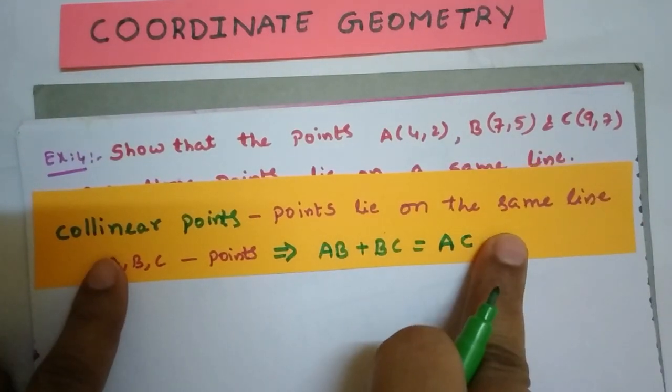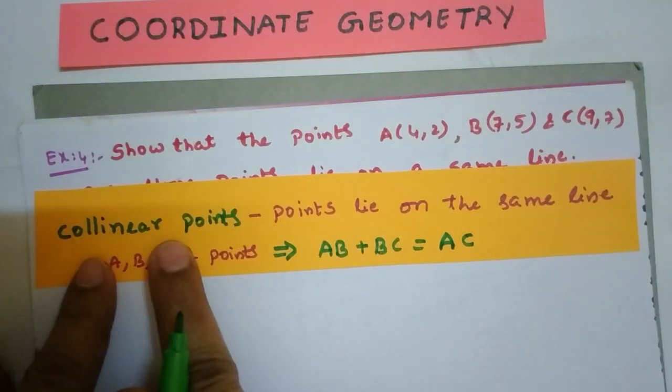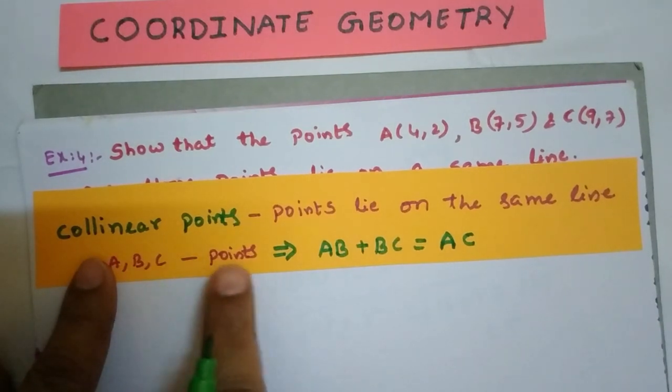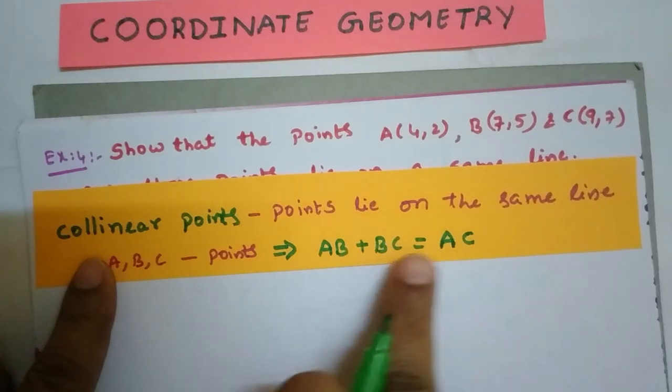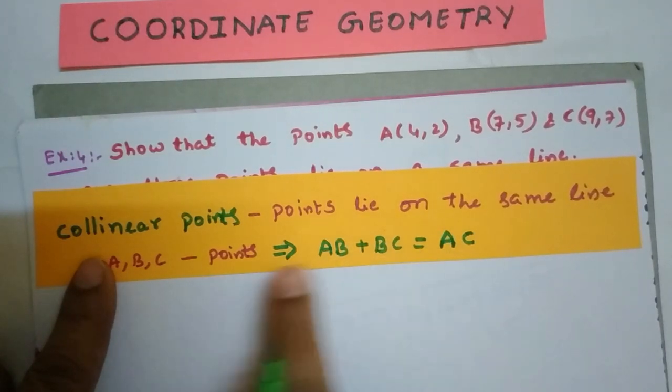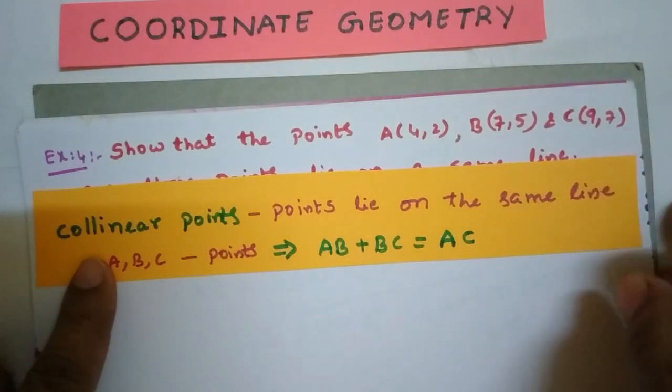Points that lie on the same line are called collinear points. If A, B, C are points, then AB plus BC equals AC. Then we call A, B, C collinear points.